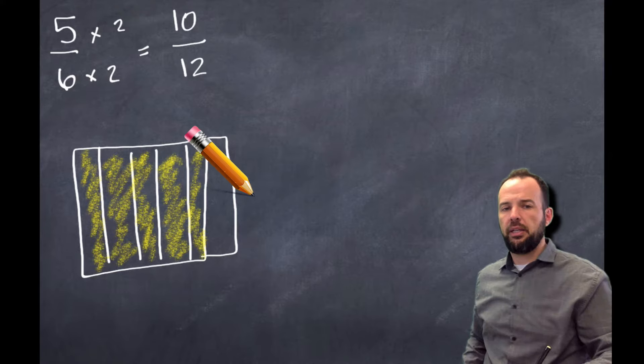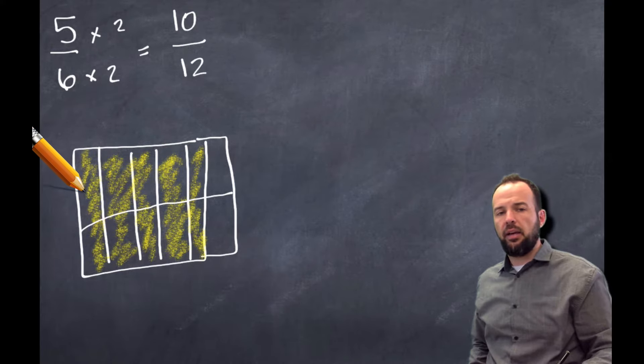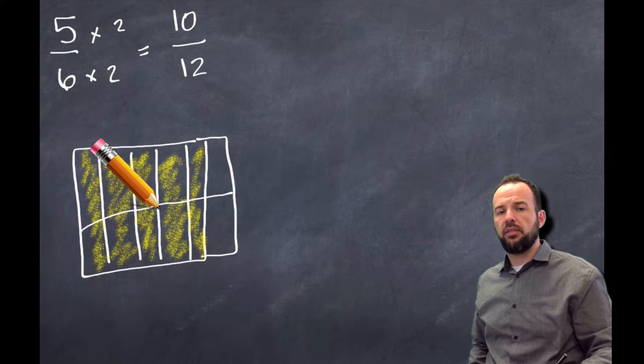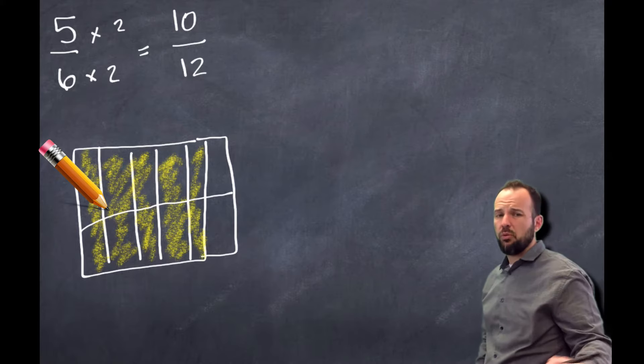We multiply by 2, right? So I'm going to double this by splitting it here. And now I have 1, 2, 3, 4, 5, 6, 7, 8, 9, 10, 11, 12, and 10 of them are colored in. So I have 10/12.